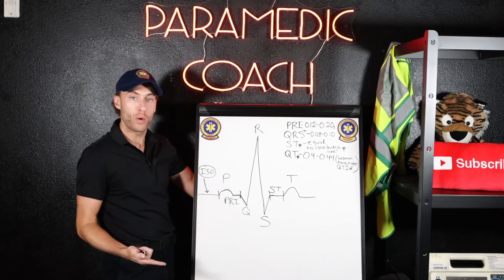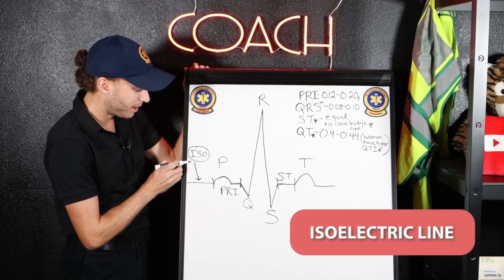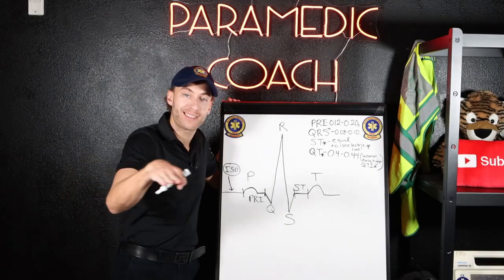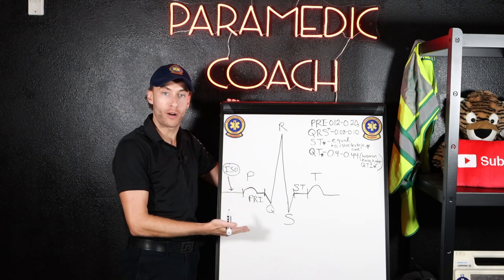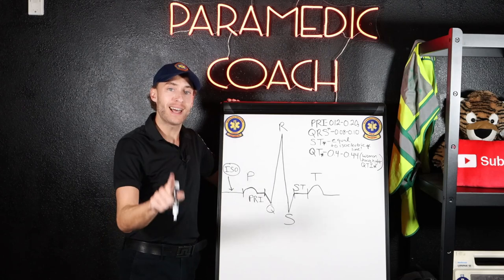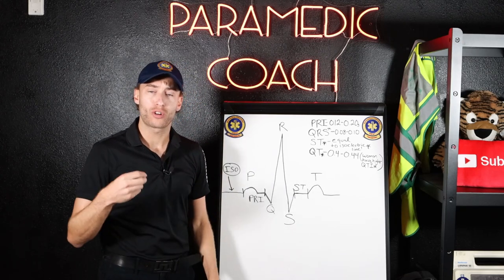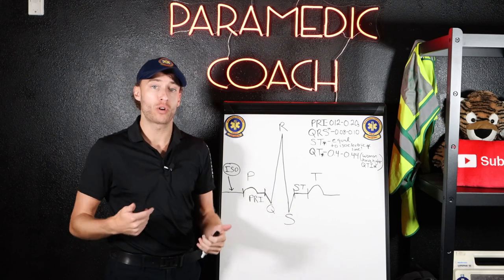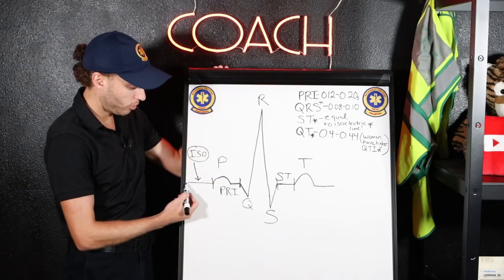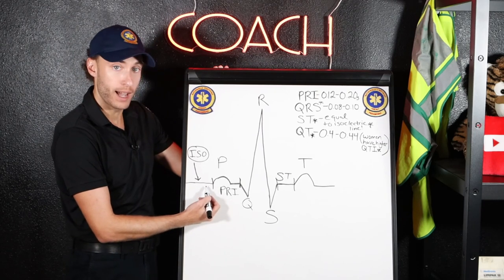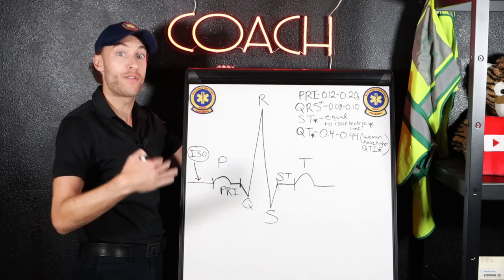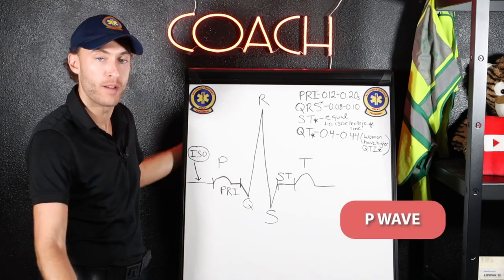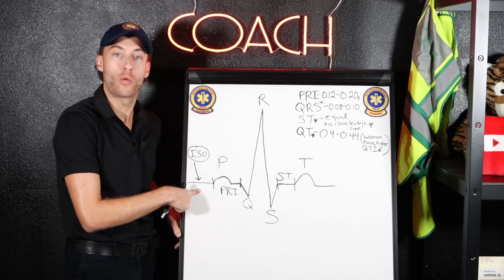We're going to talk about the EKG waves you need to know. Let's start with the isoelectric line. This isoelectric line — why is it important? It's our baseline for determining where all these waves are. Most importantly, we're going to use that isoelectric line to determine things like PR depression and ST elevation or depression. The isoelectric line is the straight line in between the heartbeats — the line before the slope starts for the P wave.